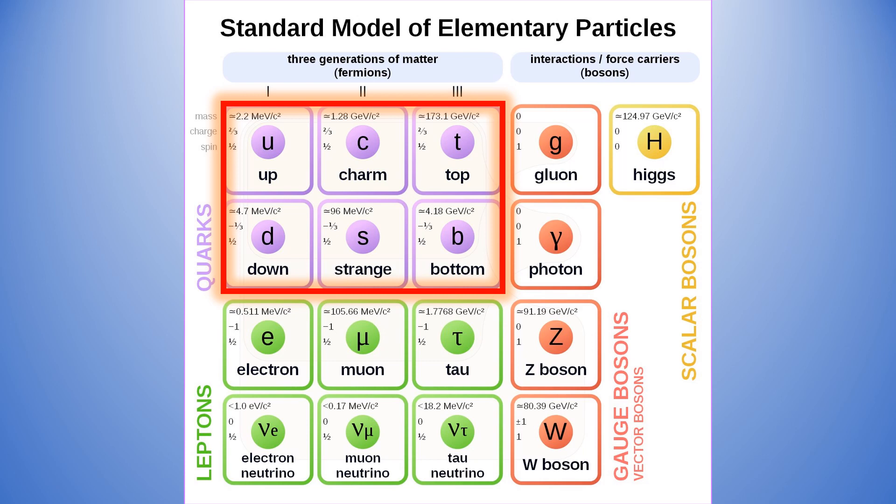The up, charm, and top quarks have a fractional electric charge of two-thirds. The other three quarks have an electric charge of minus one-third. The quark interaction is mediated by eight massless gluons, which are the gauge bosons of the strong force. Their number follows from the symmetry group of the strong force, which is SU3.